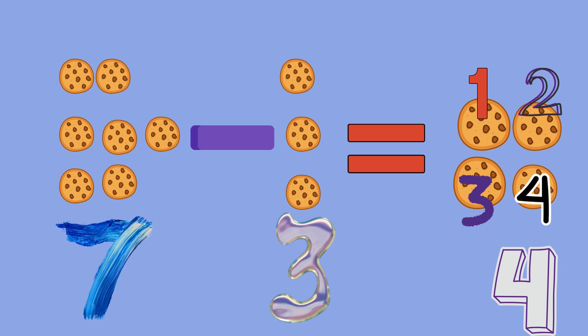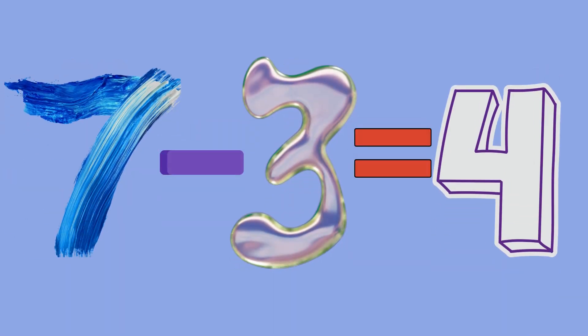Mmm, I have seven delicious cookies. But oh no, I'm so hungry I eat three of them. How many will remain? Let's count to find out. One, two, three, four. So seven cookies minus three cookies equals four cookies. We write this as 7 minus 3 equals 4.